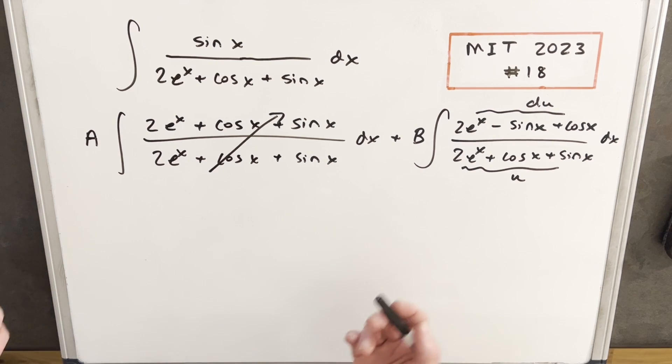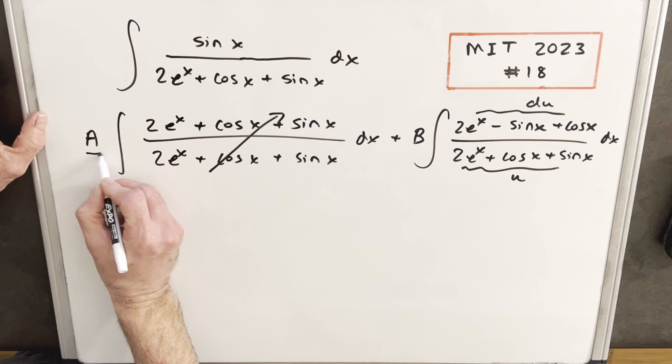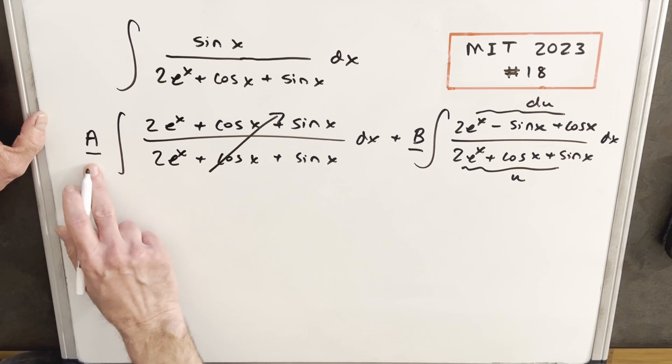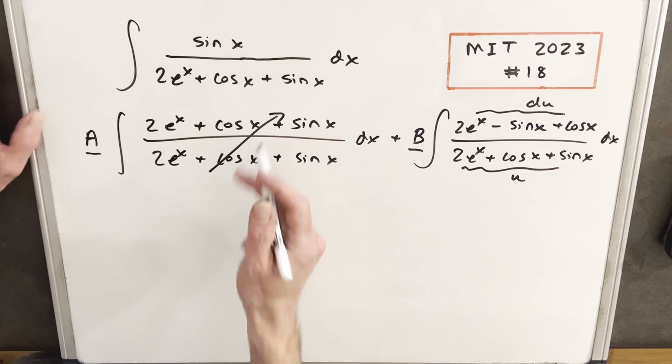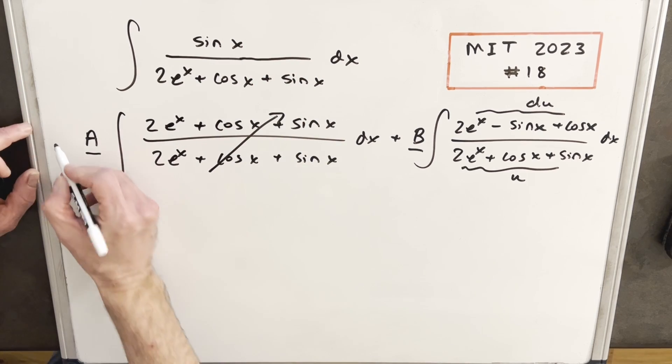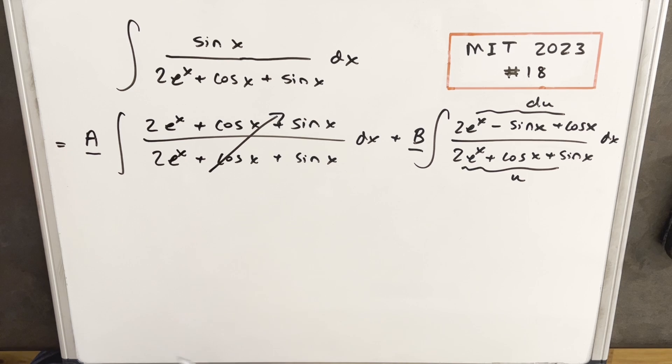And so the key to making this whole dream come true is we need some a and some b, and this is just going to be a number. We want some constant value a and b such that when we add this together, we get back to this integral. Because if this isn't the same as this, if it's not true, then we can't do it. So we just need to find these a and b values.